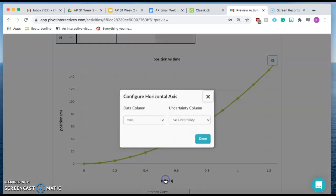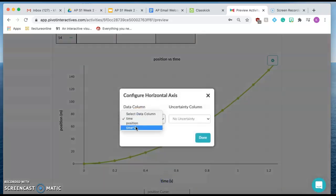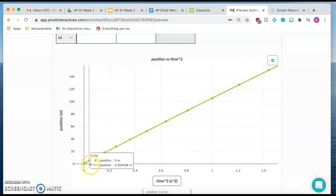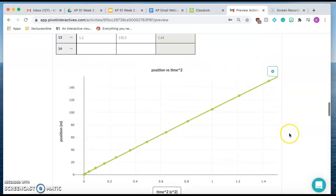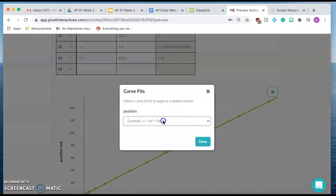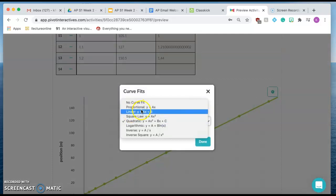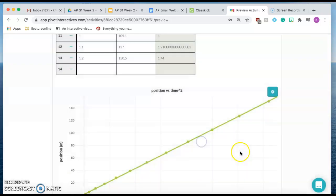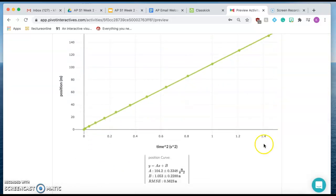So now when I change this graph, and instead of picking time, if I pick time squared, okay, see what happens is this makes this a line, okay? And it probably, let's see, that still looks actually pretty decent, which is not right there, okay?